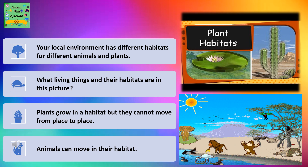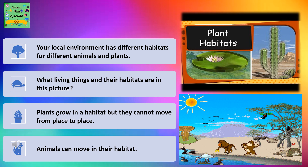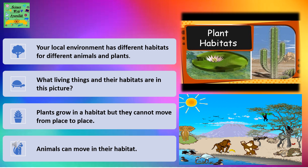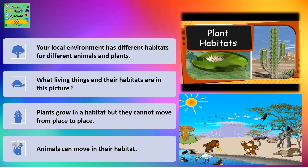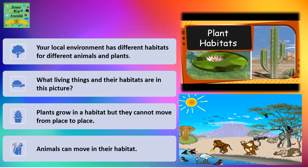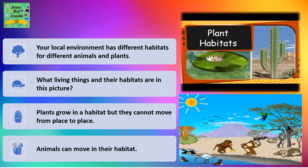Your local environment has different habitats for different animals and plants. What living things and their habitats are in this picture? Plants grow in a habitat but they cannot move from place to place. Animals can move in their habitat.